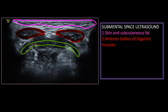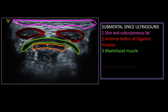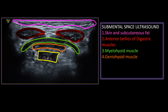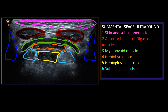Next, this is the mylohyoid muscle, next is the geniohyoid muscle, next is the genioglossus muscle. Both of these are the sublingual glands, and the lateralmost shadow is the body of the mandible. This typically mimics the frog face view.